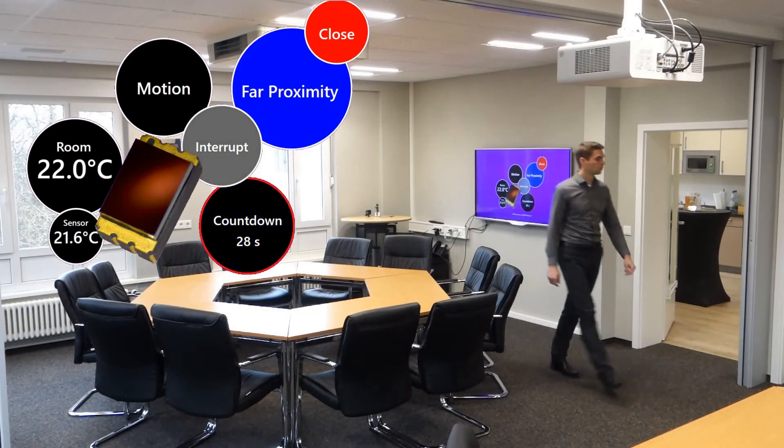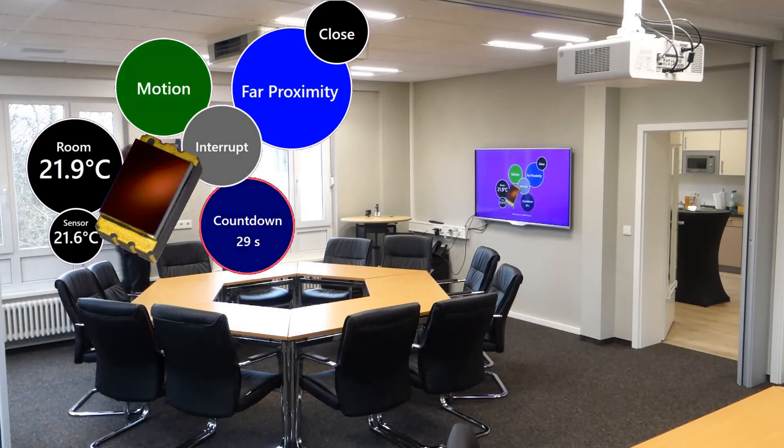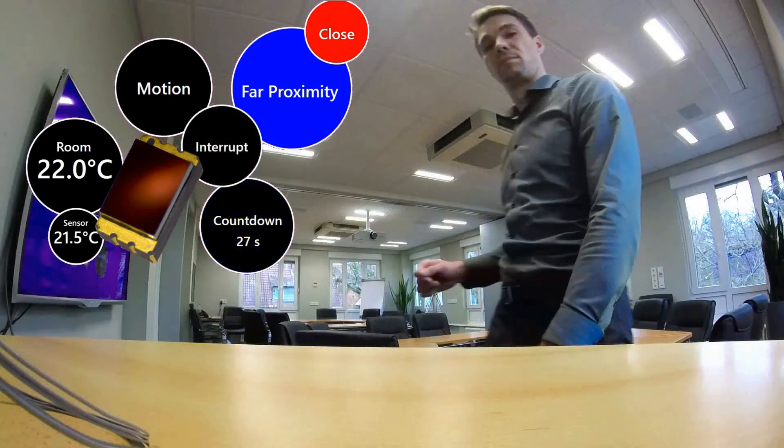In this example, we extended the far proximity sensing to 5 meters. On top of this, close proximity was indicated in a distance of about 1 to 2 meters.